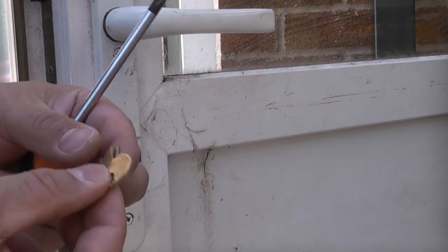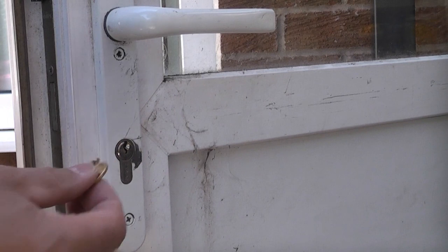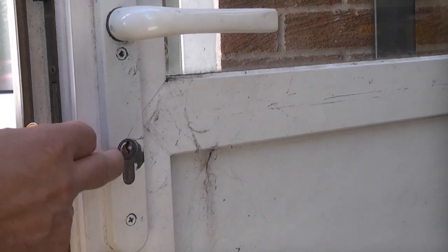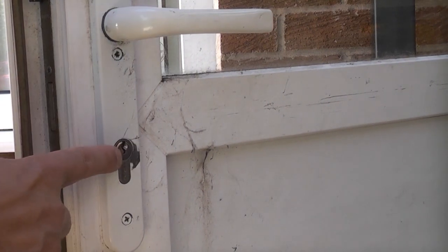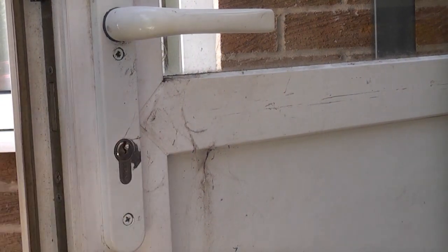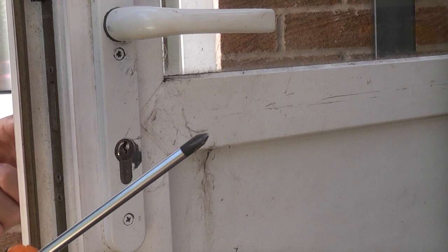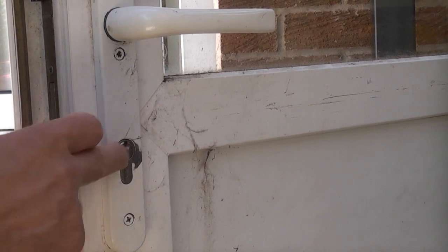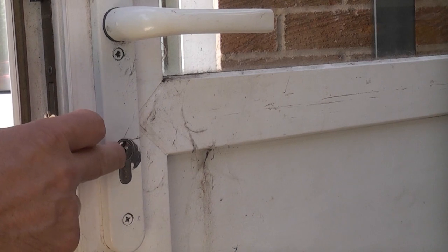If you can't actually turn the key you've got a major problem because you need to get that part out before you can fit a new part, and you can't get that part out unless you can turn the key. With a lot of locks you can put another key in the other side, but that won't work because part of the key is still in this side.